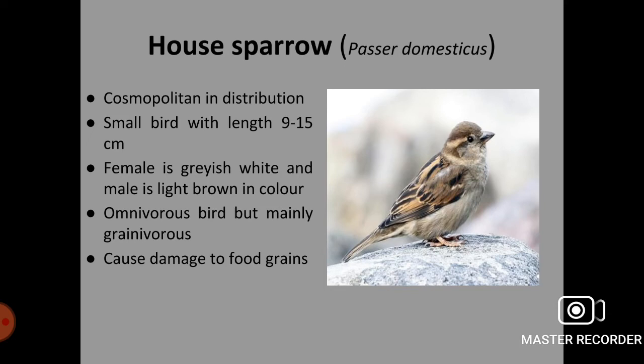Next pestiferous bird is the house sparrow, Passer domesticus. It is cosmopolitan in distribution. It is a very small bird with length of 9 to 15 cm. Females are greyish white in colour while males are light brown. It is an omnivorous but mainly granivorous bird, meaning it mainly feeds on food grains, causing damage to food grains.